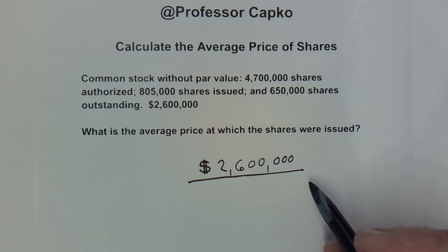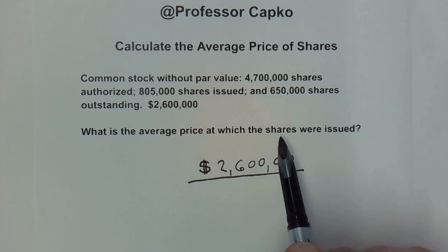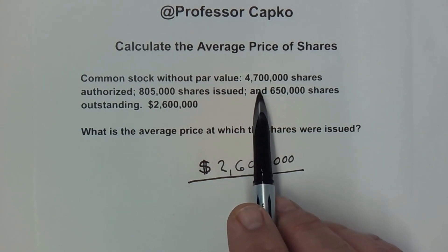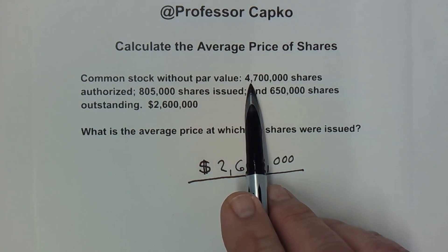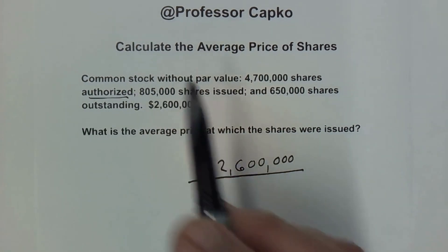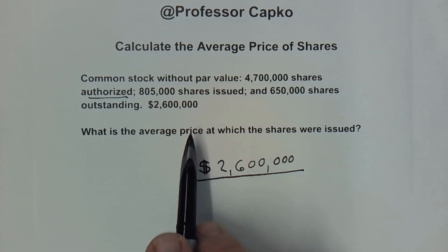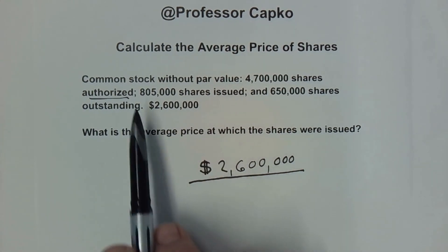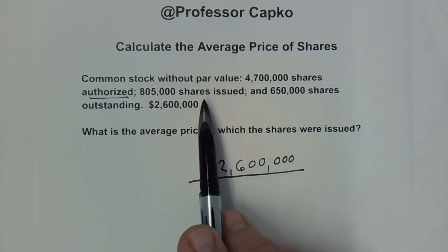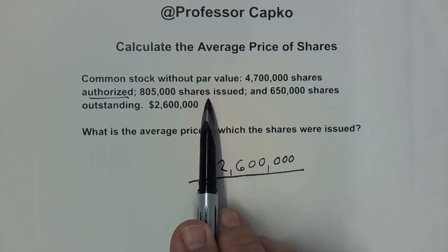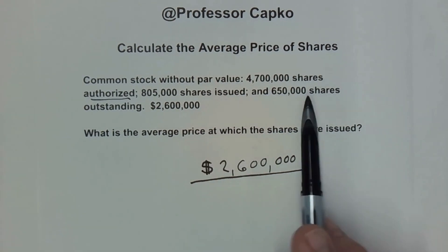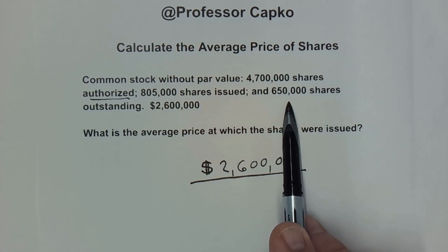The main trick to this question is what number of shares do we divide by if we want a price per share? We have 4,700,000 shares that are authorized — that means the board of directors have decided that's the total number of shares that can be issued, but it does not mean that they have been issued. We have issued 805,000 shares, and of that only 650,000 shares are outstanding.